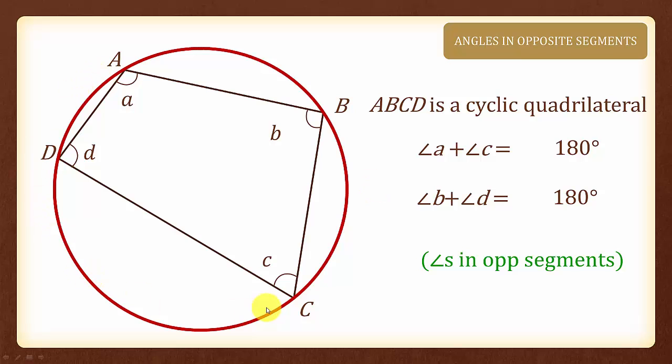Now, do take note that for a cyclic quadrilateral, all four points must lie on the circumference of the circle.